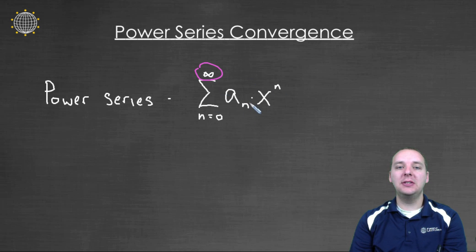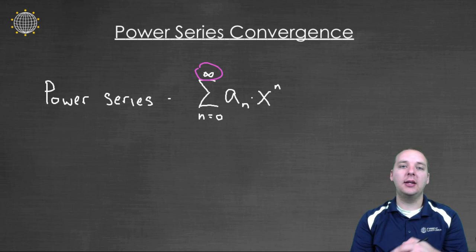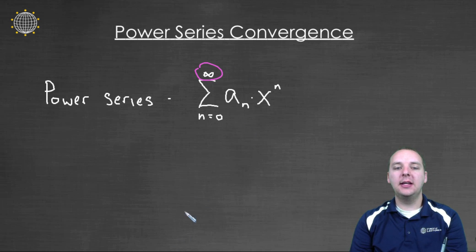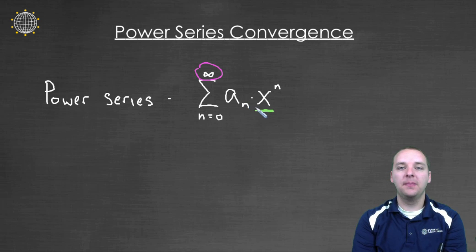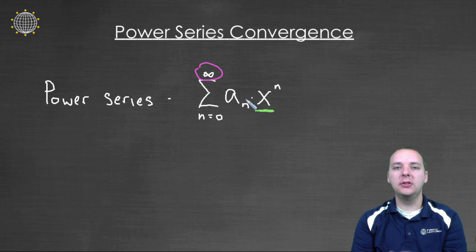When written as a series, these look very similar to the series we've studied previously — convergence, the ratio test, the root test, the p-series test, and all those. But one big difference is that our infinite series have variables in them. That changes things because we can't really talk about whether this converges or diverges until we've made some choices for x. Some x values might make the series converge, but other choices might make it diverge.